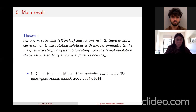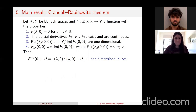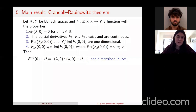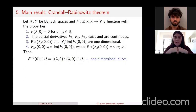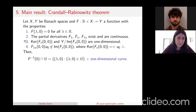This work can be found on arXiv. The idea is to use a bifurcation argument — specifically the Crandall-Rabinowitz theorem, a classical theorem in bifurcation theory. If you have two Banach spaces and a functional F going from R times one Banach space into another with these properties: first, F(lambda, 0) equals zero for any lambda in R (corresponding to our property that F(omega, 0) equals zero for any omega) — we say we have a trivial line of solutions.